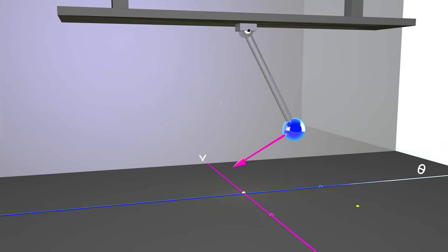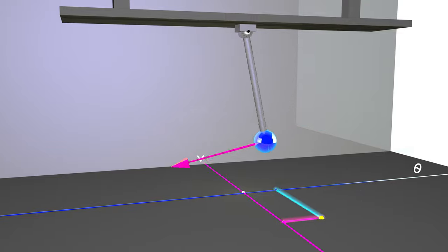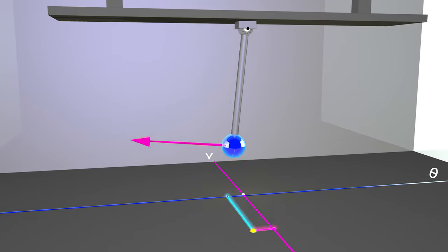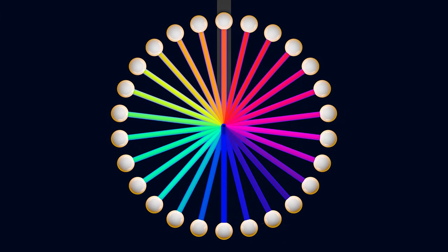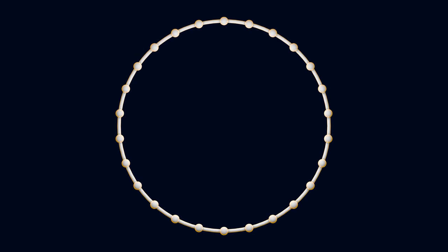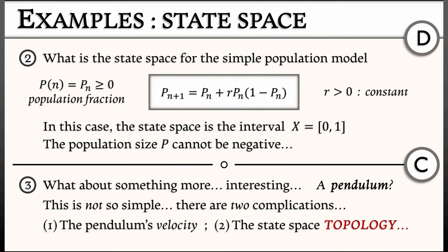We'll talk more about that in volume two, but the second complication is the topology of the pendulum. Because a pendulum with, let's say, a rigid rod can swing all the way around and do a full 360. That means that there's something circular involved with the topology of this state space.